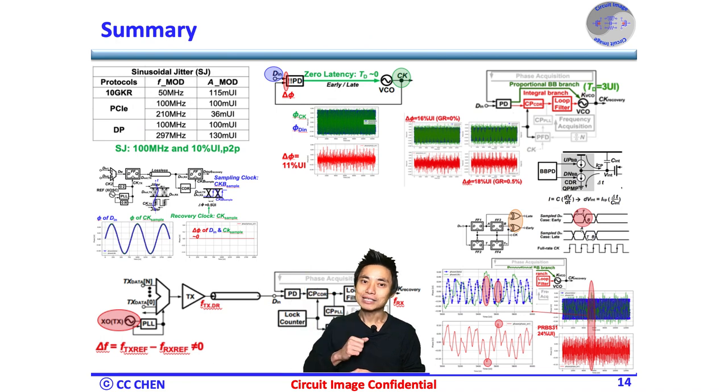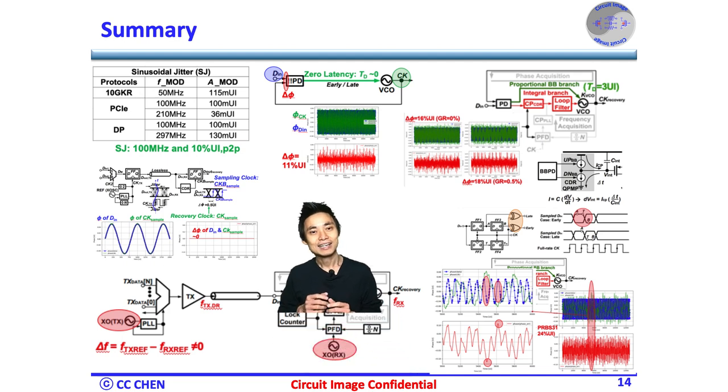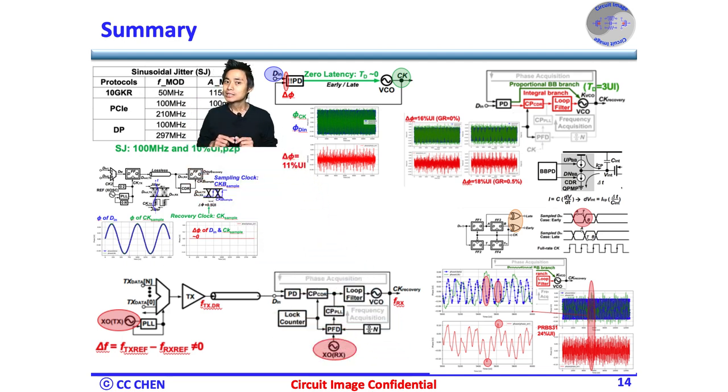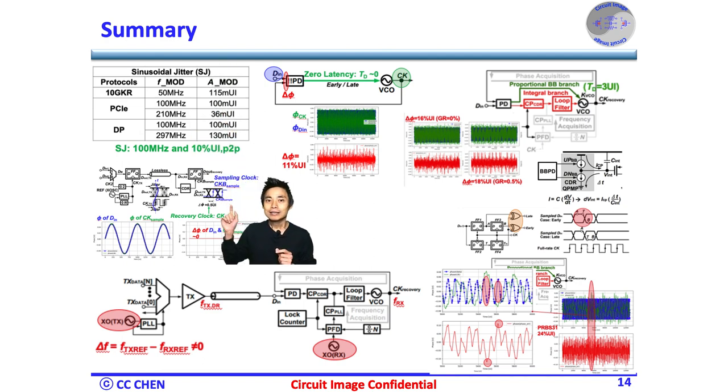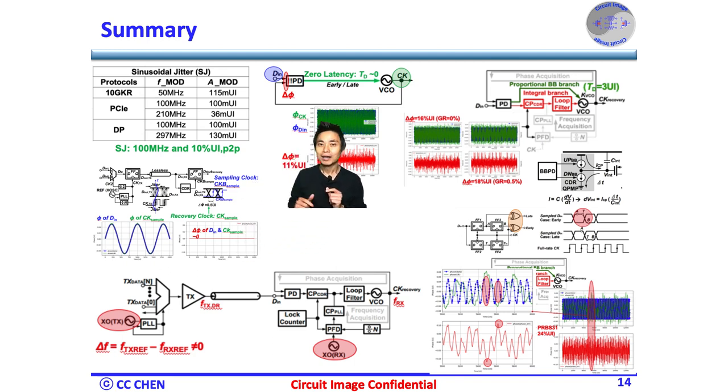Here are the summarized images of why you need a low loop latency in a CDR design. Similar to the JTOL, most specifications define the SJ for the CDR to benchmark its tracking ability. Therefore, we could continue last time's Bang-Bang CDR Loop Dynamic Analysis to understand how the loop latency impacts the loop phase error between the input data and output clock during the input jitter tracking behavior.